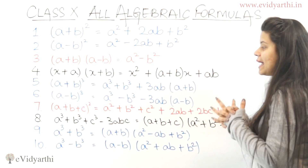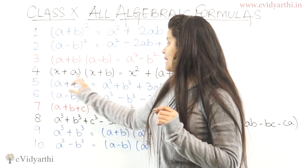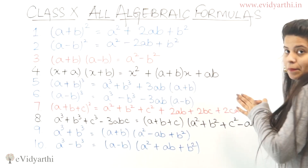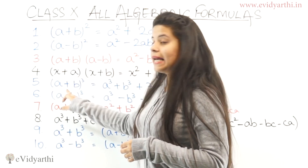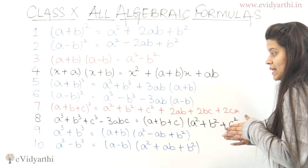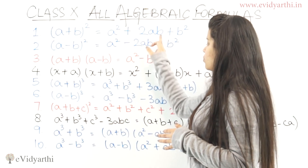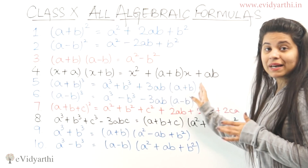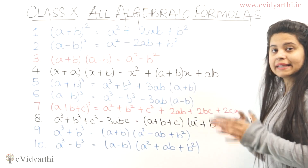Then we have X plus A times X plus B. After that, A plus B whole cube equals A cubed plus B cubed plus 3AB times A plus B. Notice that when going from the square to the cube formula, the 2AB becomes 3AB, and the factor A plus B is also multiplied in.